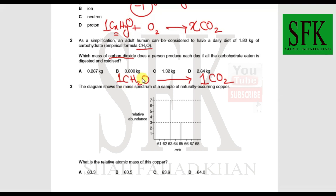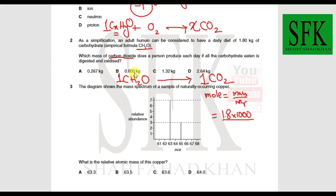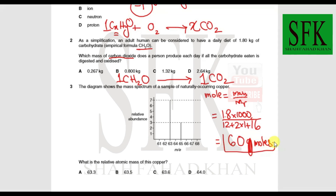To calculate the moles of carbohydrate, use moles = mass/Mr. The mass is 1.8 kg, multiplied by 1000 to get grams, divided by the Mr which is 12 + 2(1) + 16 = 30. This gives 60 moles of carbohydrate, which produces 60 moles of carbon dioxide.